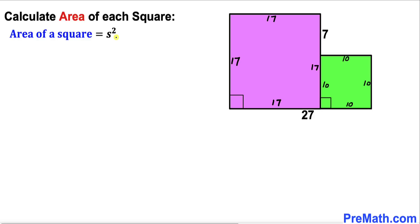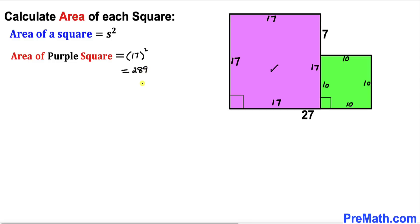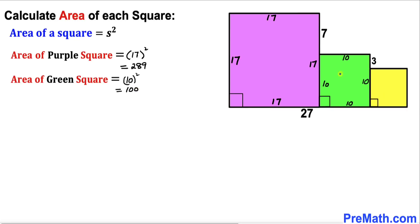Recalling the area of a square formula — Area equals s squared, where s is the side length — the area of the purple square is 17 squared, which equals 289 square units. Likewise, the area of the green square is 10 squared, which equals 100 square units.